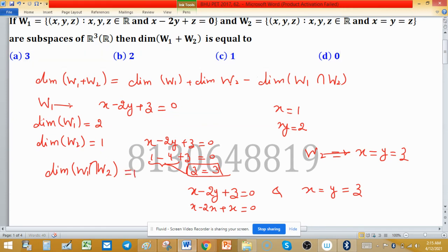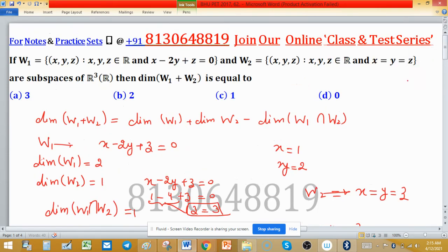Put this value in the result as explained above. Dimension of W1 is 2 plus dimension of W2 is 1, minus dimension of intersection which is also 1. 1 cancels out by 1, and dimension of W1 plus W2 is 2. Option B is correct.